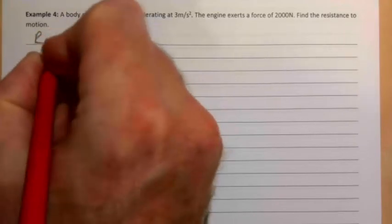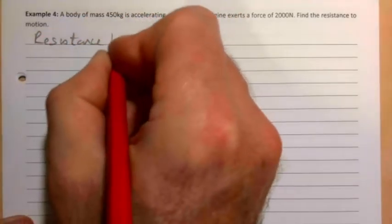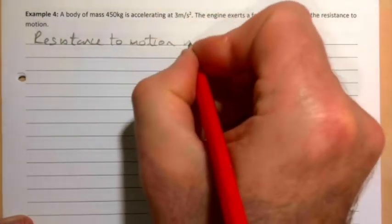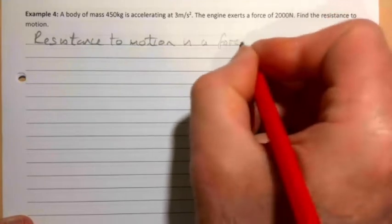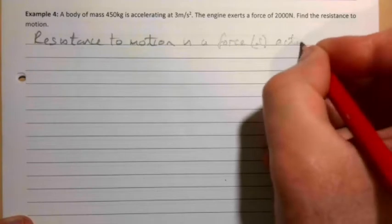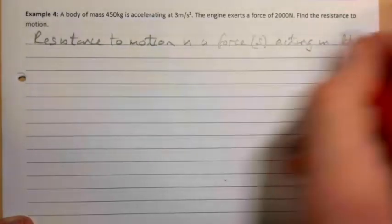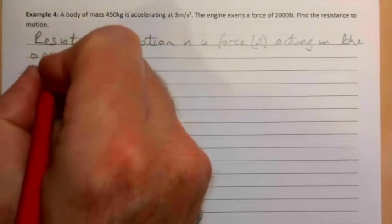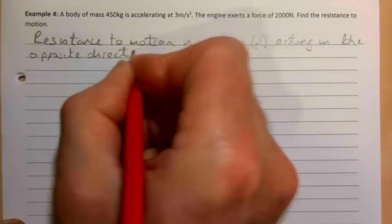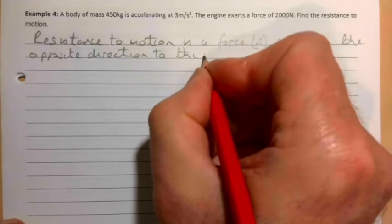Let's take down what that means. First of all, resistance to motion is a force. Might be more than one force acting in the opposite direction to the motion of the body.